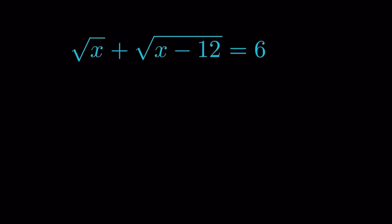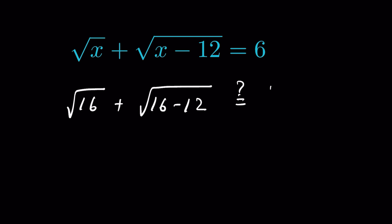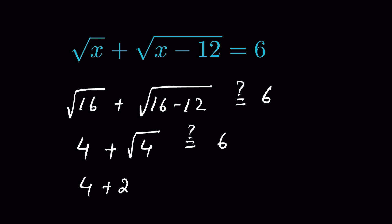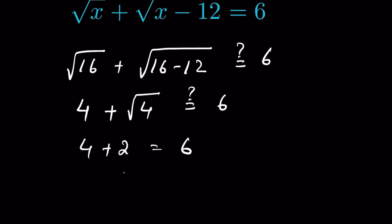Let's verify: when x equals 16, square root of 16 plus square root of 16 minus 12 should equal 6. Square root of 16 is 4, and 16 minus 12 is 4, so square root of 4 is 2. Therefore 4 plus 2 equals 6, and LHS equals RHS. The solution is confirmed.